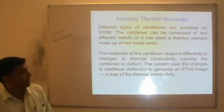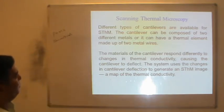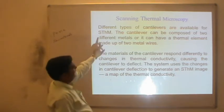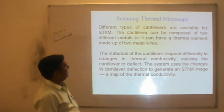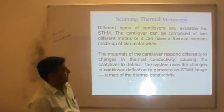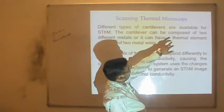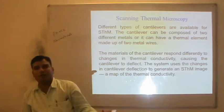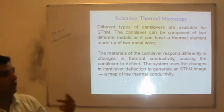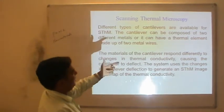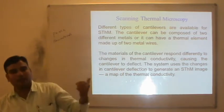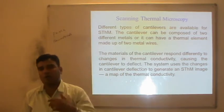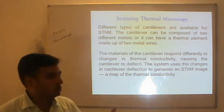Different types of cantilevers are available for SThM. The cantilever can be composed of two different metals — a thermal bimetallic combination of two metals such as platinum and iridium or any other composition. Essentially it acts like a thermocouple — any thermocouple can be used as the tip.